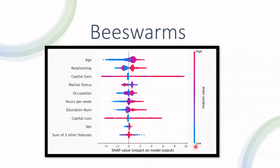We can see that when the age is high, older people, it helps the model decide that this person, this instance, is probably making more than fifty thousand dollars a year. That is how we interpret this graph.